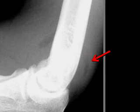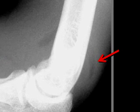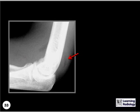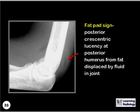What is the name of this sign? This is the posterior fat pad sign, which is that posterior crescent-shaped lucency seen at the posterior distal aspect of the humerus from fat, which is being displaced by fluid in the elbow joint, most often associated with a fracture around the elbow joint.